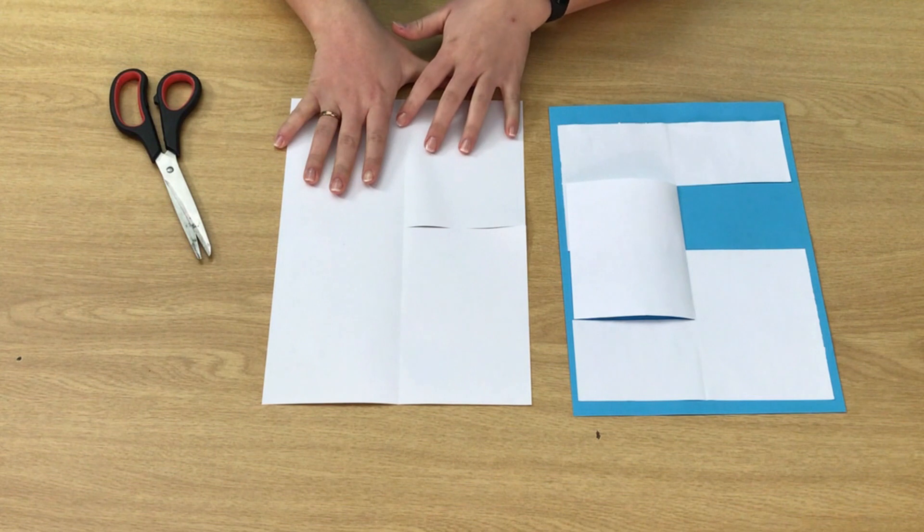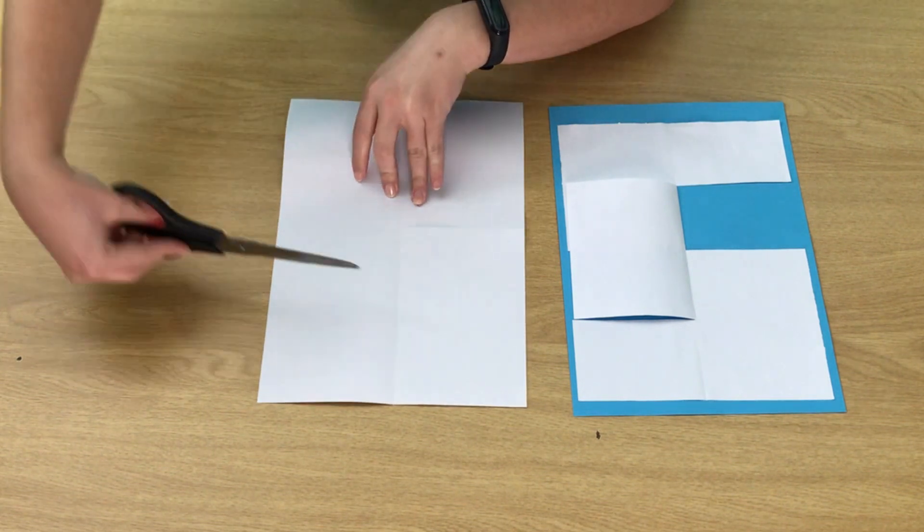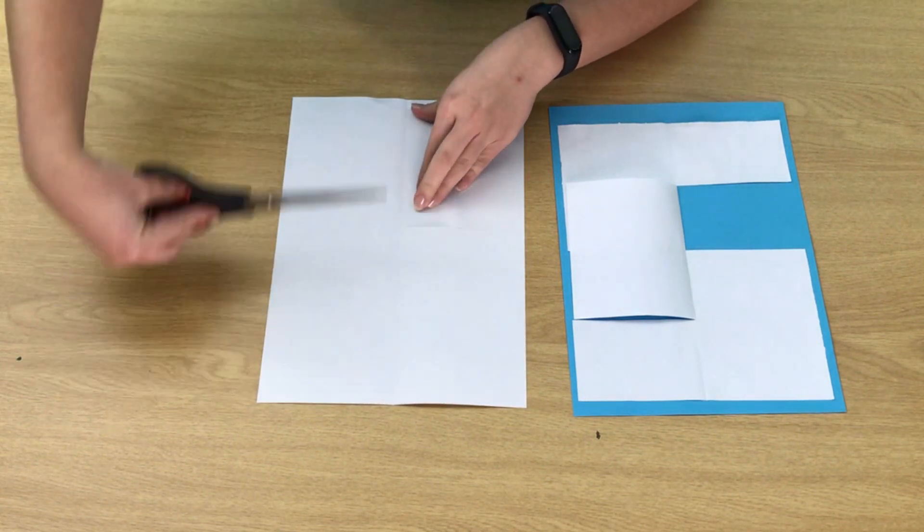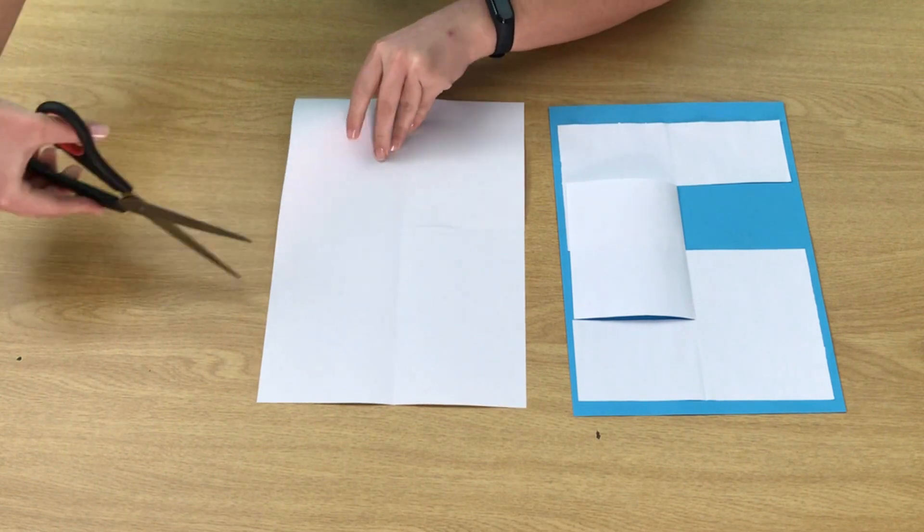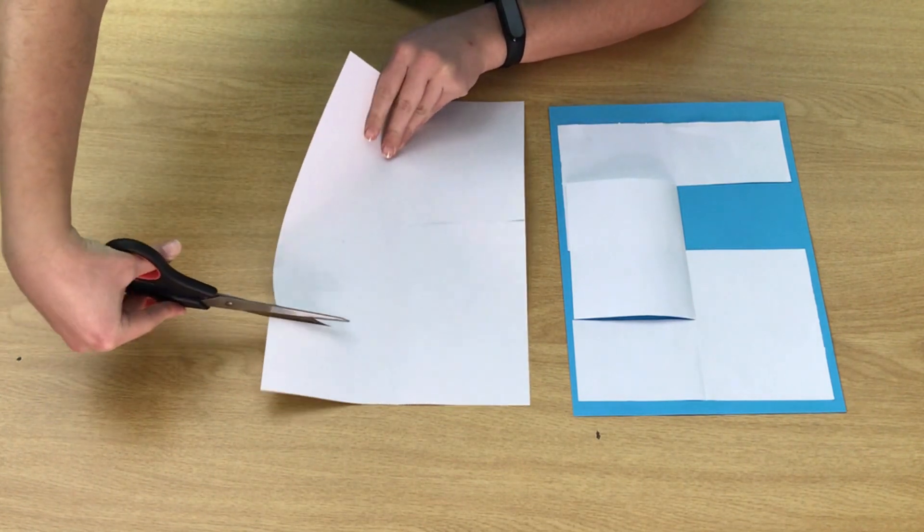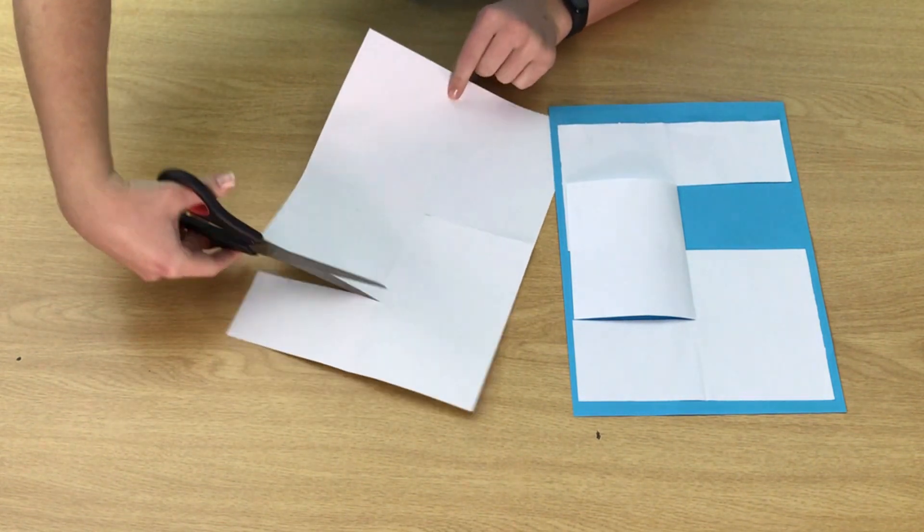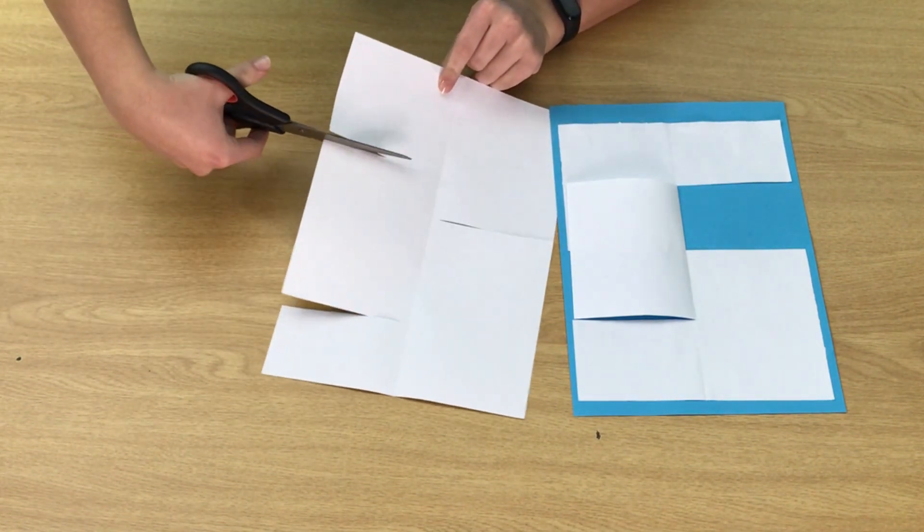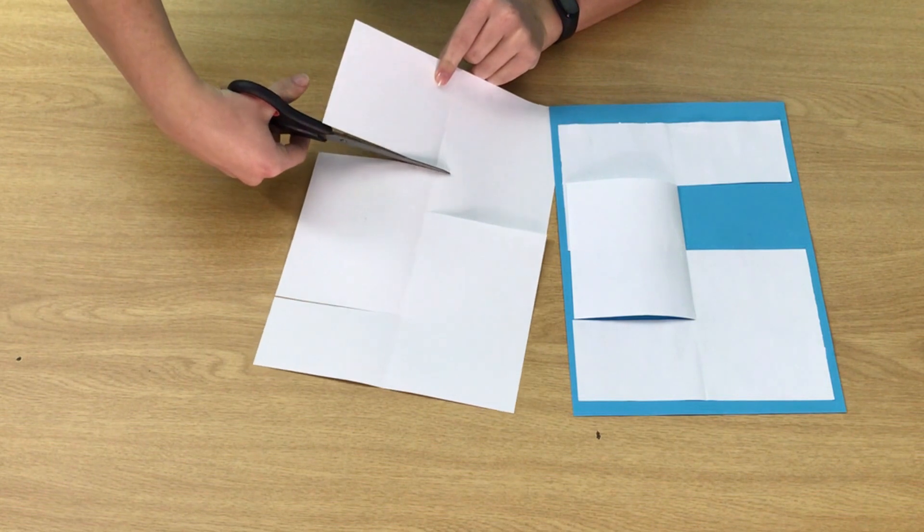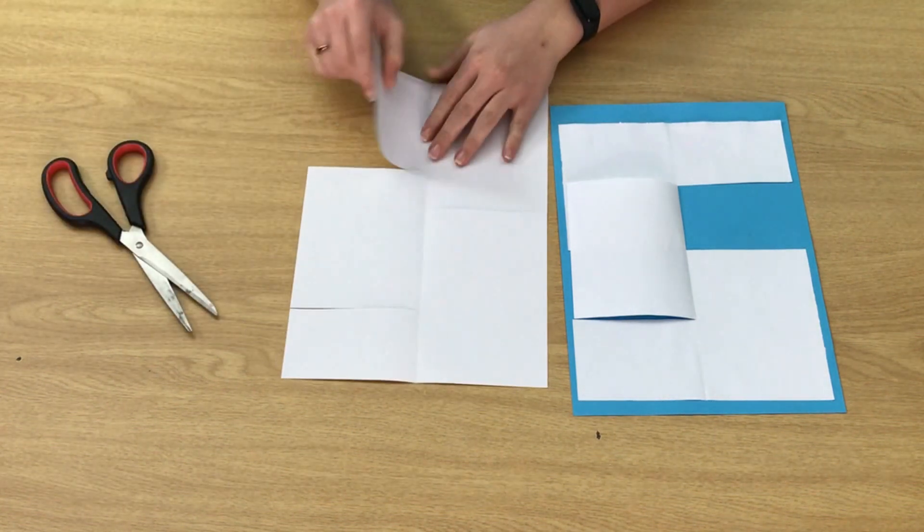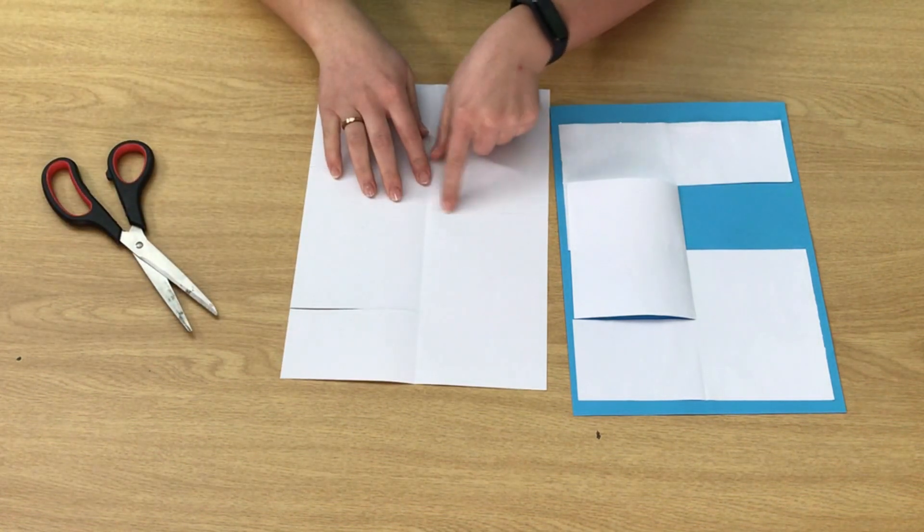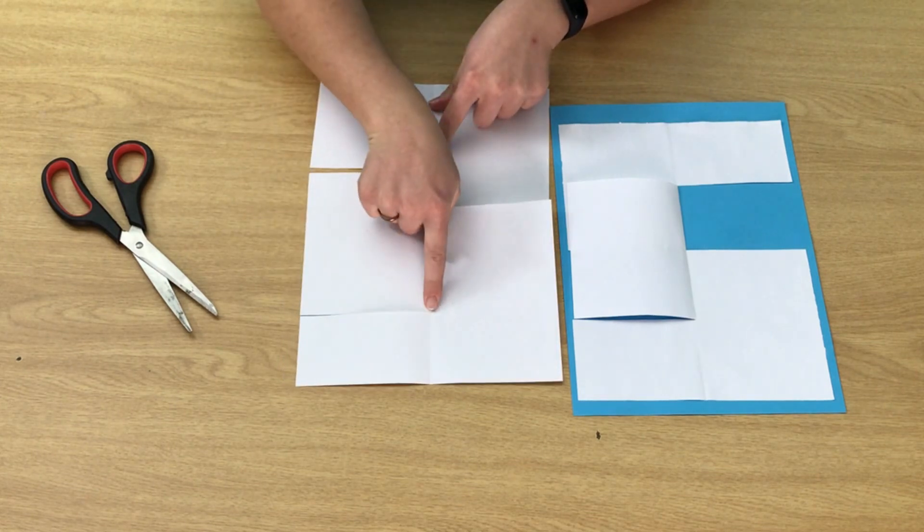On the other side of where you've cut, roughly go about a third into the page and a third into the page and cut. You've got a cut there, a cut down the middle there, and a cut there.